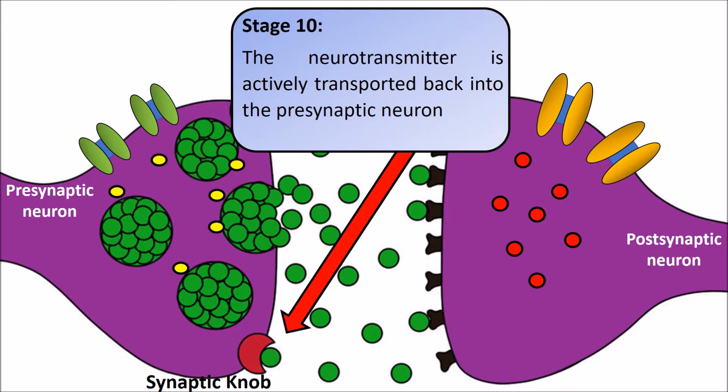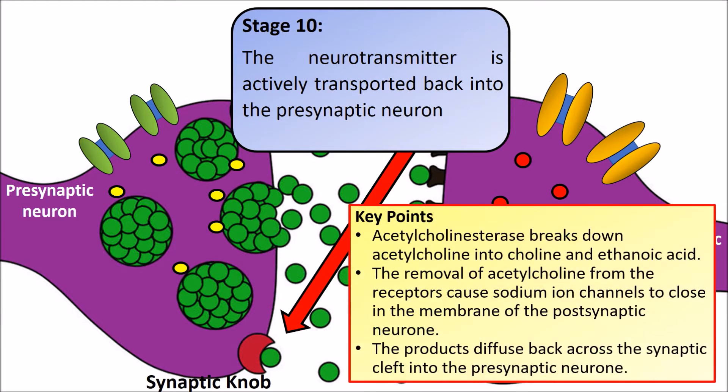At this stage there is still a lot of neurotransmitter in the synaptic cleft. We don't want to leave it there as it would cause problems. Therefore, the acetylcholine is broken down by the enzyme acetylcholinesterase.